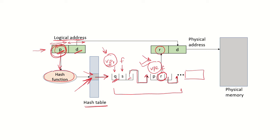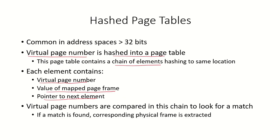This frame number will be taken, and the offset, which remains the same, will be taken from the logical address to compute the physical address. This physical address will be used to access that particular location. This is how a hashed page table works. The page number of the logical address will be checked and matched with the elements until a page match is found. Once a match is found, the corresponding physical frame will be extracted and combined with the offset to access the physical main memory.